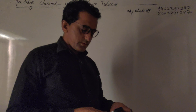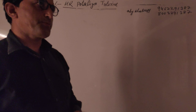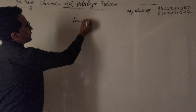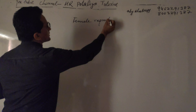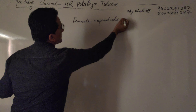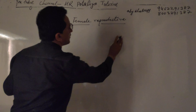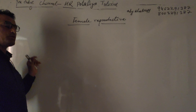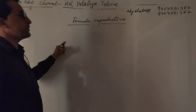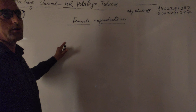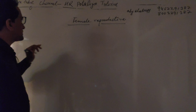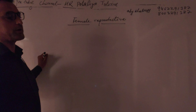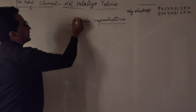Good afternoon dear students. Today we have discussed chapter number 3, that is the female reproductive system. In the case of the female reproductive system, both male and female have a reproductive system, but the female reproductive system has a more complex, more complicated structure.